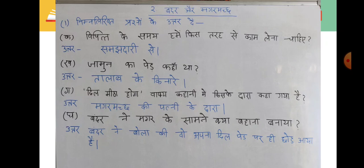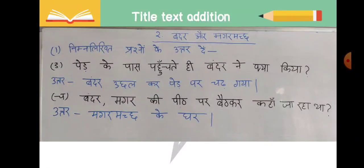यह है प्रश्न उत्तर। इसके बाद — पेड़ के पास पहुँचते ही बंदर ने क्या किया? उत्तर: पेड़ के पास पहुँचते ही बंदर उछल कर पेड़ पर चढ़ गया था। चौथा प्रश्न: बंदर मगर की पीठ पर बैठकर कहाँ जा रहा था? बंदर, मगरमच्छ की पीठ पर बैठकर मगरमच्छ के घर जा रहा था।